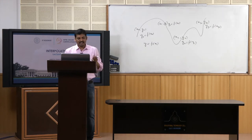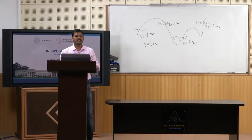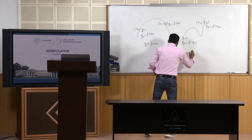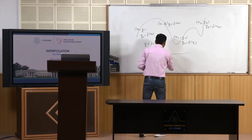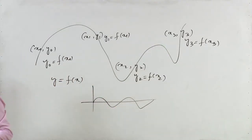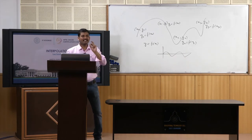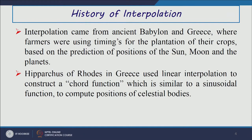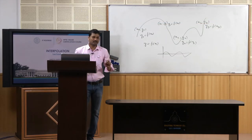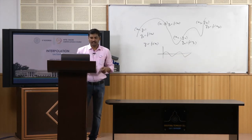Hipparchus of Rhodes in Greece used linear interpolation to construct a chord function, which is similar to the sinusoidal function — specifically the sine or cosine function. This means that interpolation exists at each phase of nature, even in the movement patterns of different creatures.